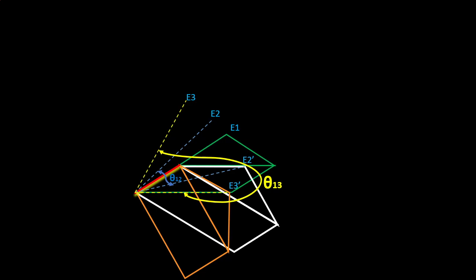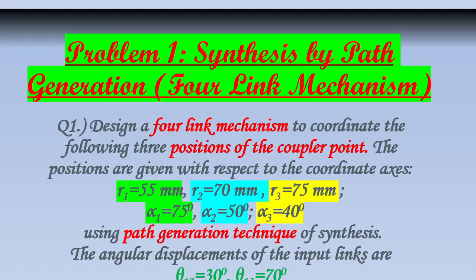Let's move forward and see how to do the problem. The problem is to design a 4-bar mechanism to coordinate the positions of a coupler point. Three polar coordinates are given. We've seen the path generation technique to some extent. The given values are: r1 = 55, alpha1 = 75°, r2 = 70, alpha2 = 50°, r3 = 75, alpha3 = 40°, theta12 = 30°, theta13 = 70°.